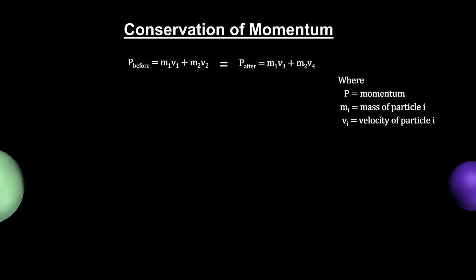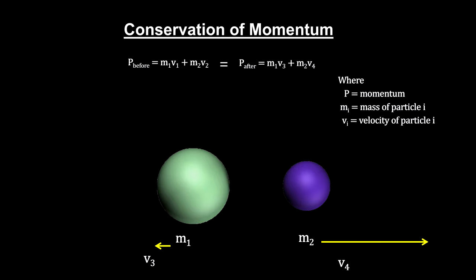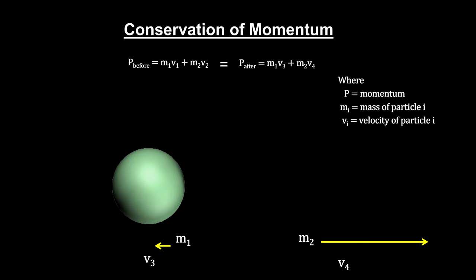Momentum is the mass times the velocity. In nature, this quantity is conserved. We'll use this law of nature later on when we start colliding particles to see what happens.